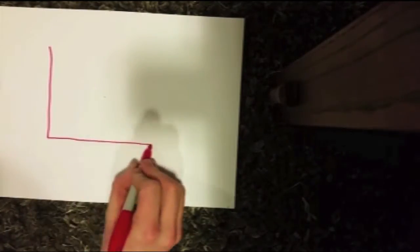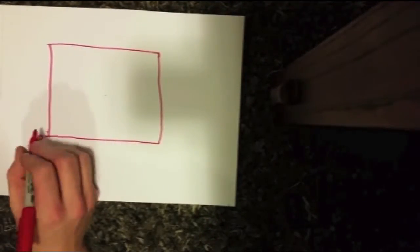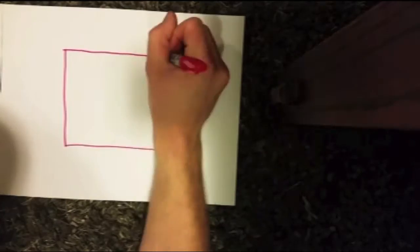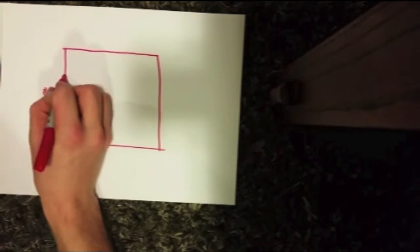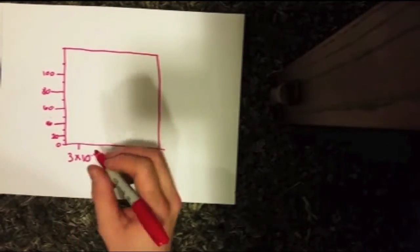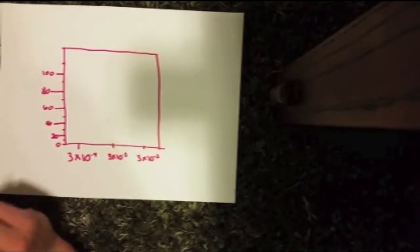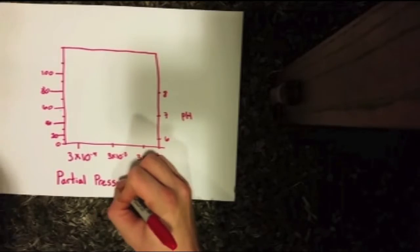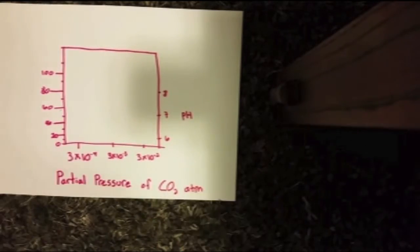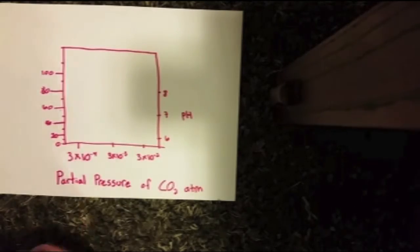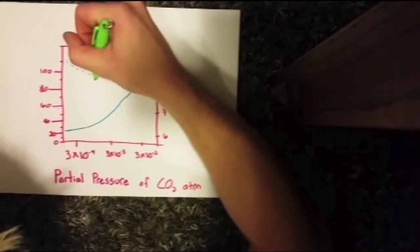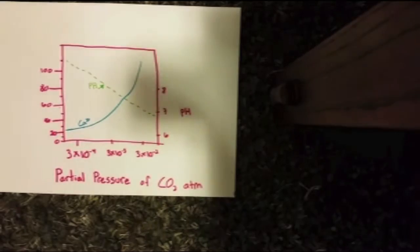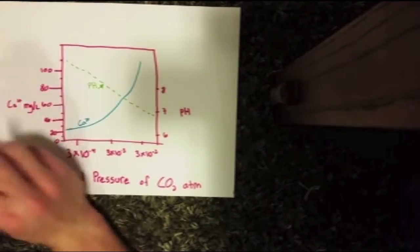Here is a graph of the relationship between the partial pressure of carbon dioxide and the pH of the water, and how the pH affects the concentration of calcium 2+ ions. As the partial pressure of carbon dioxide goes up, the pH goes down, as shown in this graph, and the solubility of calcium 2+ goes up.